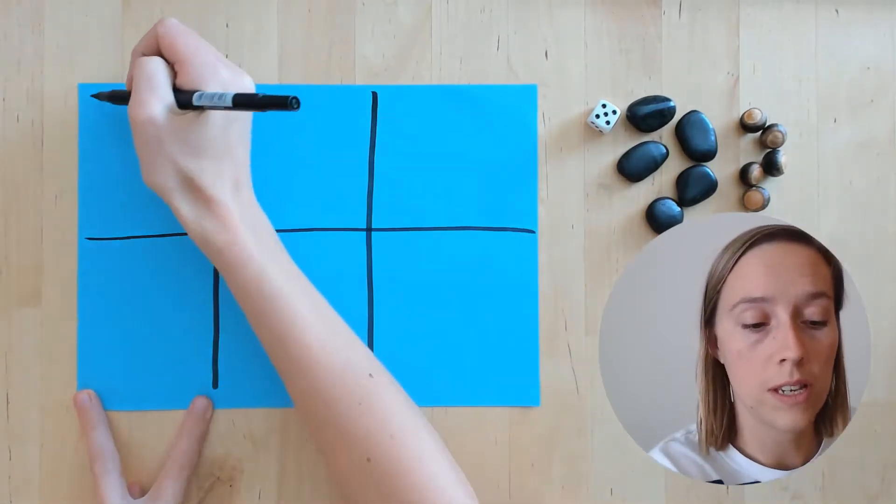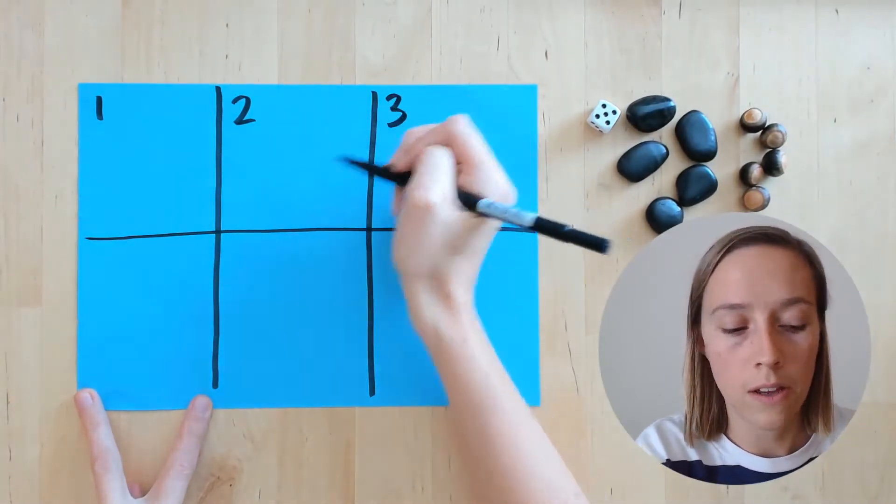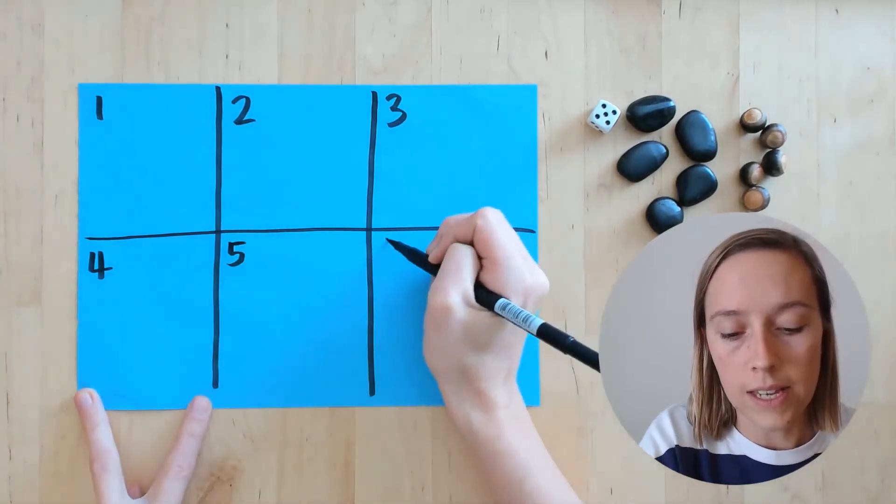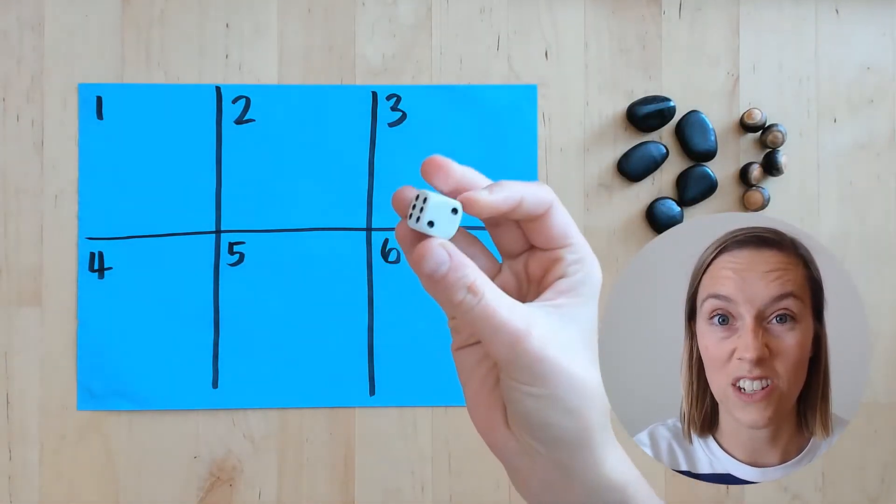Then you can label the boxes one, two, three, four, five, six to match the six different sides of the dice.